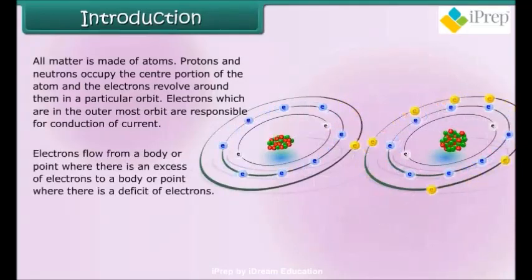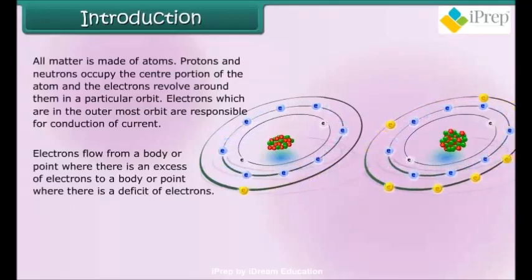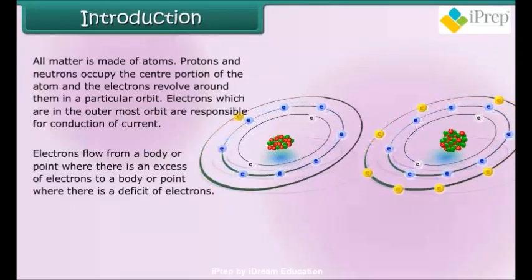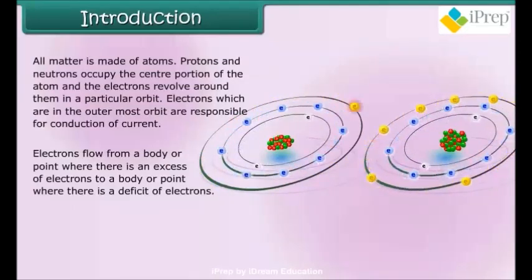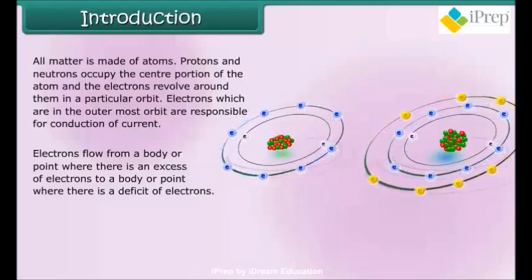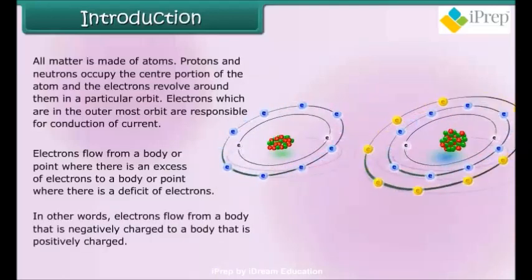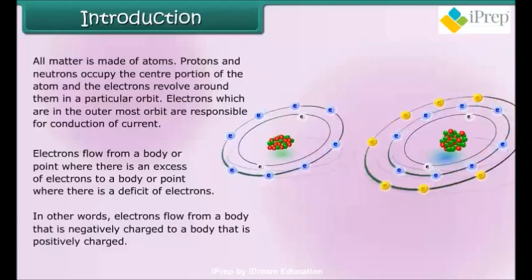Electrons flow from a body or point where there is an excess of electrons to a body or point where there is a deficit of electrons. In other words, electrons flow from a body that is negatively charged to a body that is positively charged.